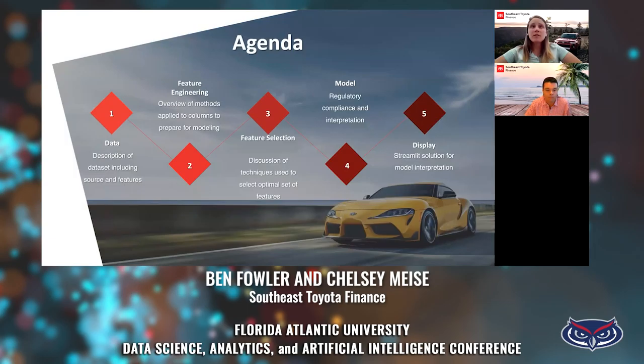Here's a quick walkthrough of the agenda. First, we'll begin with the data — the description of the data set, including the source of our data and the features. Then we'll move on to feature engineering, which is the overview of the methods applied to columns for modeling.